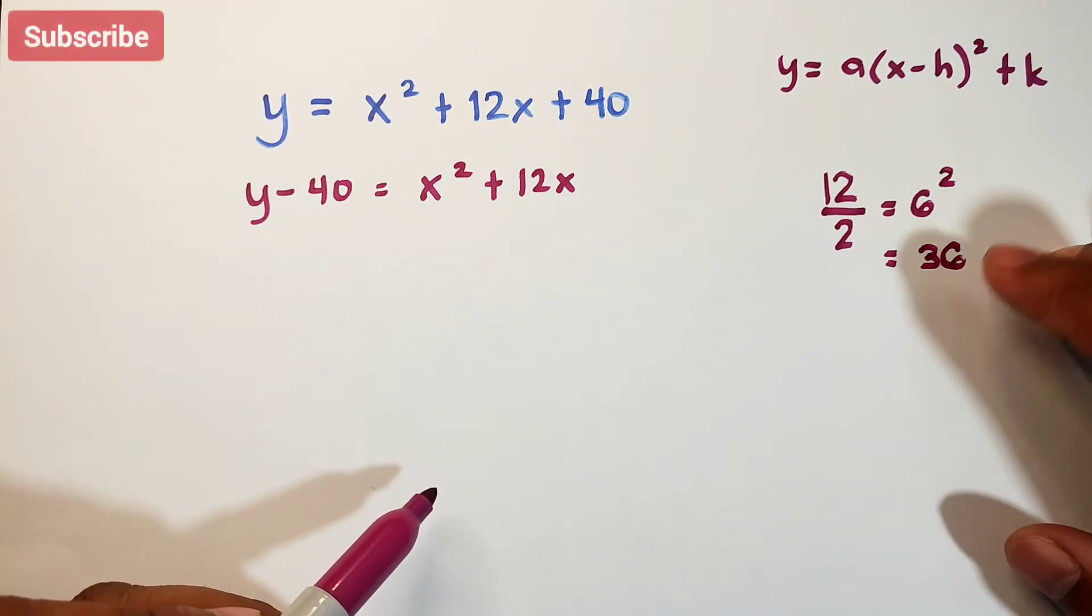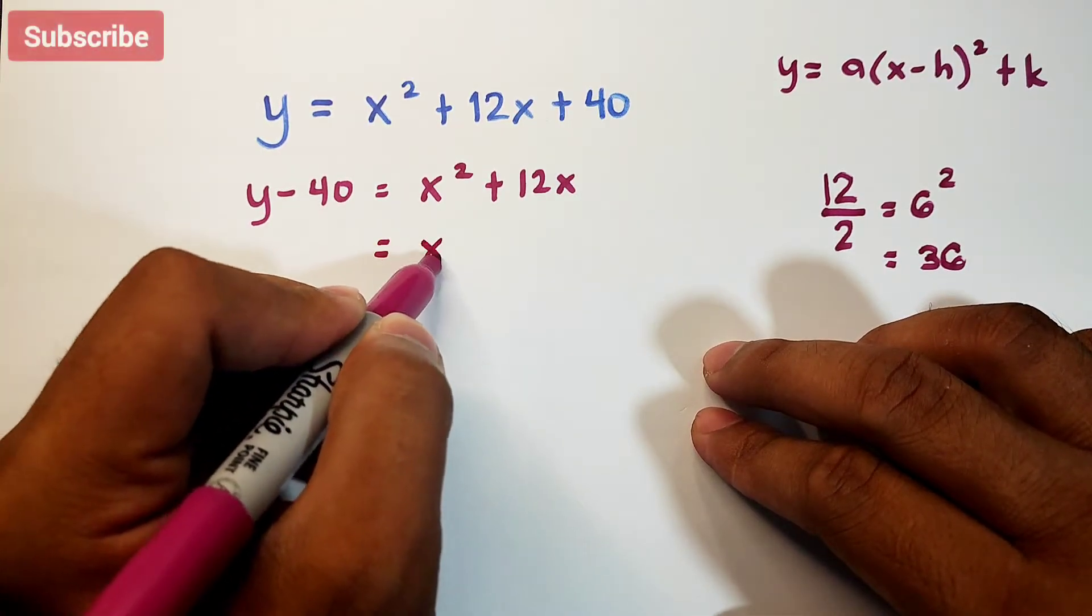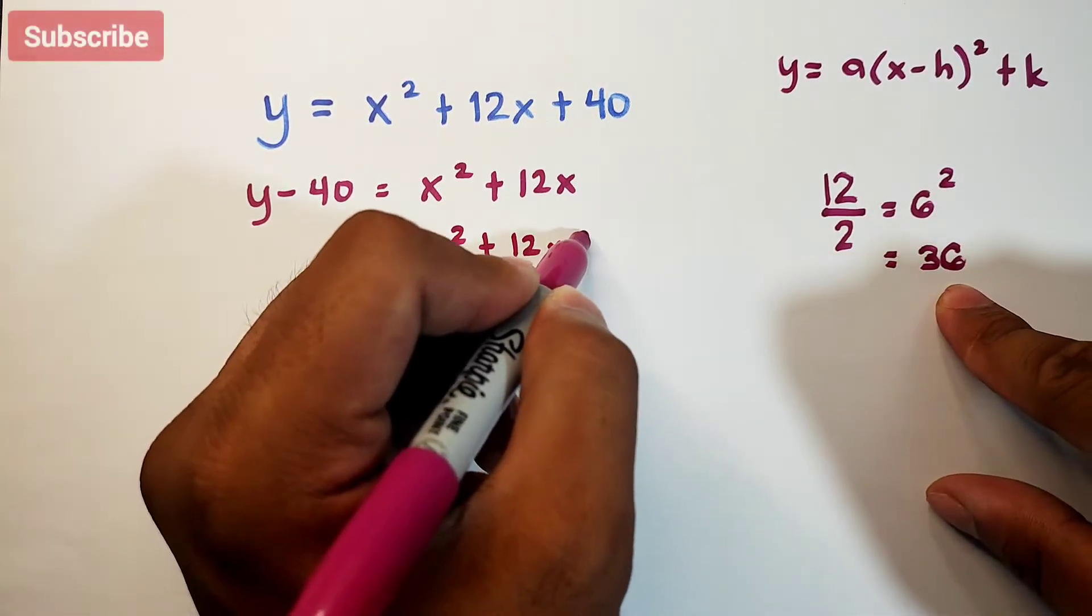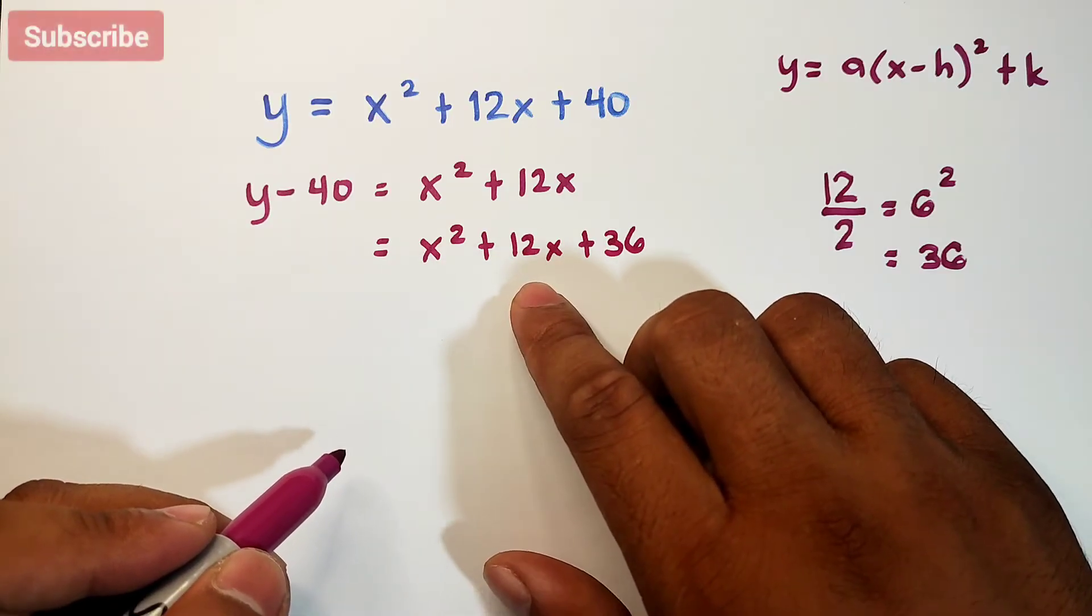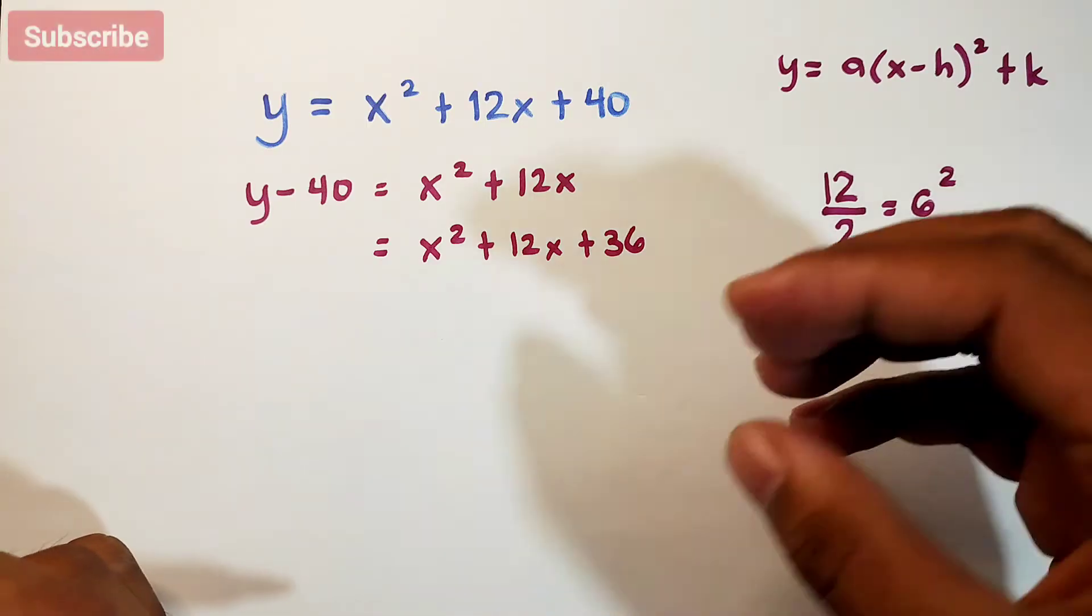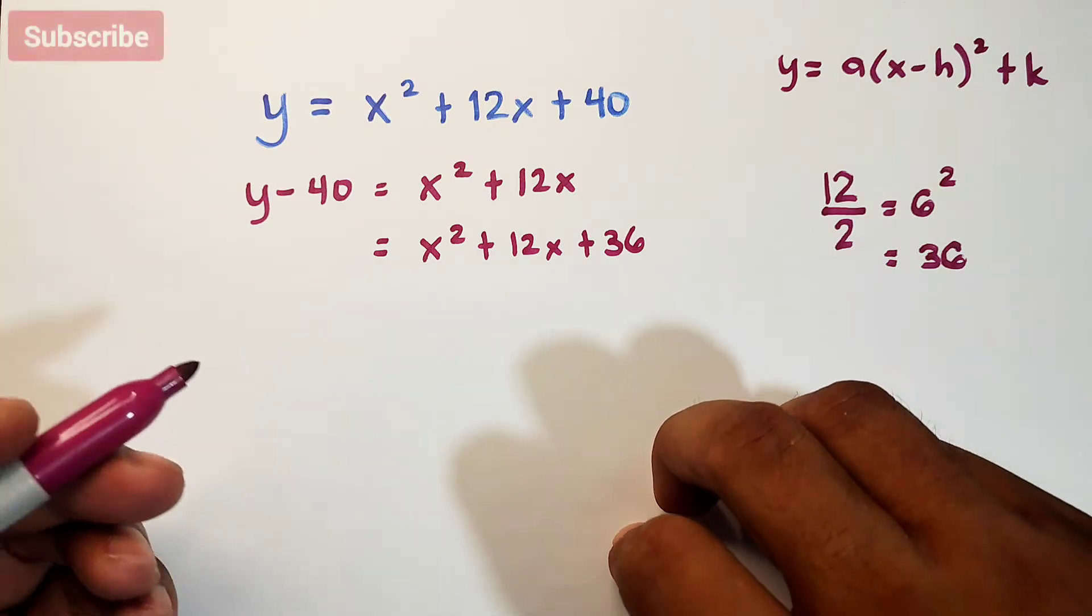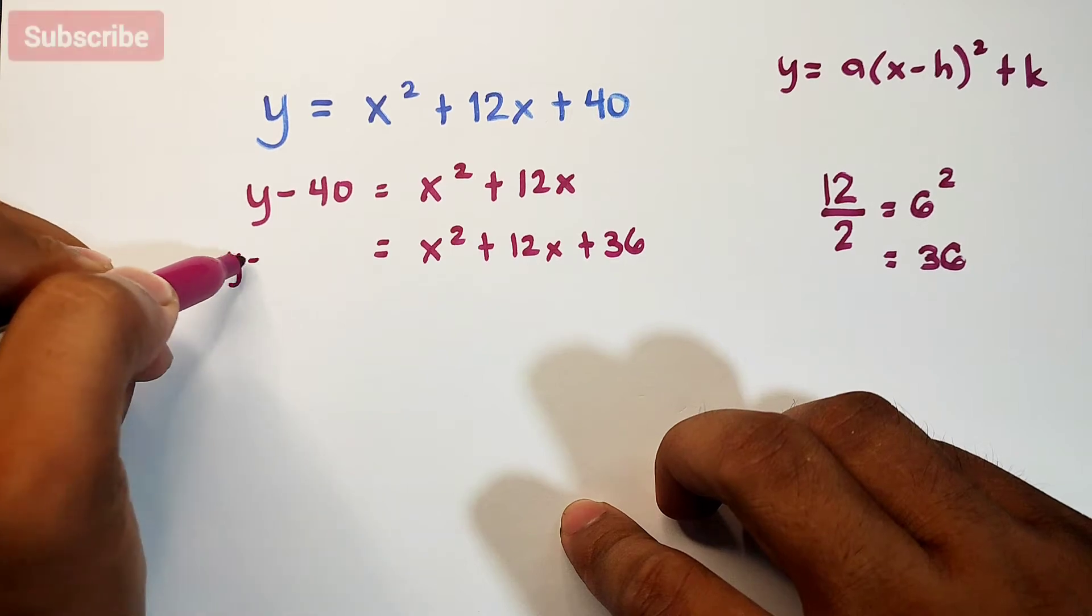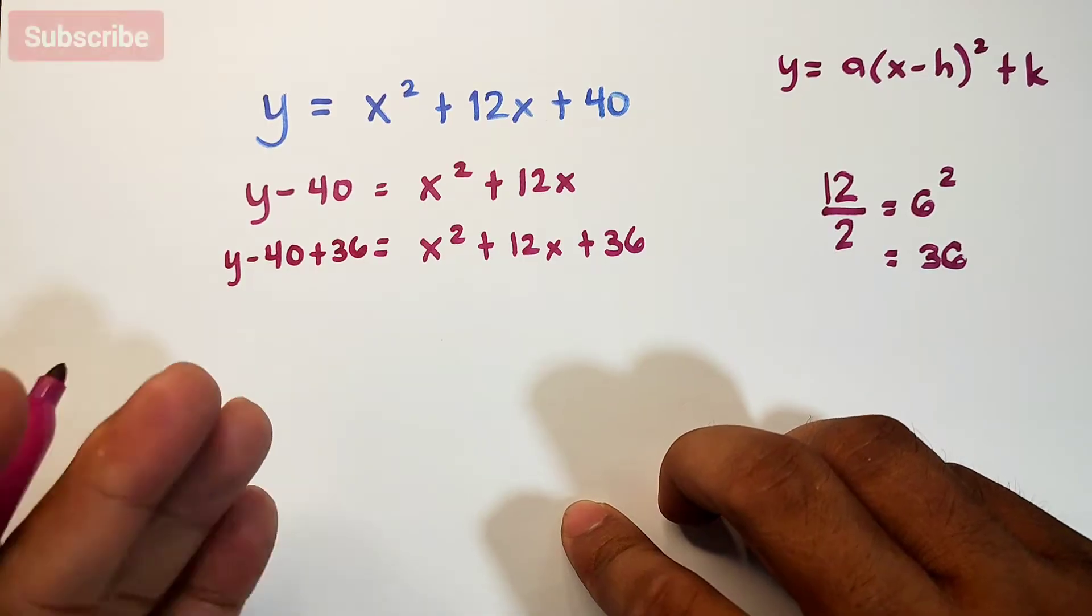We will add 36 here, so it becomes x squared plus 12x plus 36. Now this is a perfect square trinomial. Since we added 36 on the right side, we must also add 36 on the other side to balance the equation. So you have y minus 40 plus 36.